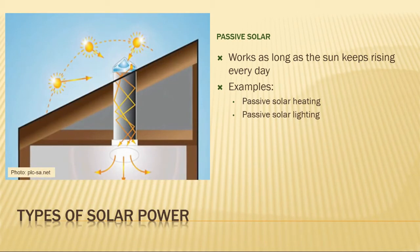Passive solar is also used for lighting. Buildings that use skylights to take advantage of the sun's light during the day are using passive solar technology. This avoids the need to use as many electric lights indoors. In areas like basements where skylights are not possible, reflective tubes can be used to channel sunlight from the roof and direct it into the indoor space.